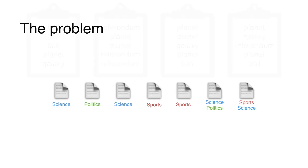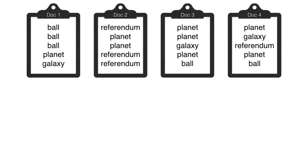Here's a small example to illustrate. Let's say our collection only contains four documents and each document only has five words. To keep it simple, let's say our language only has four possible words: ball, planet, galaxy, and referendum. And we have three possibilities for topics: science, politics, and sports.